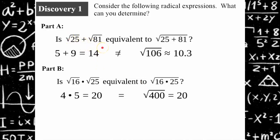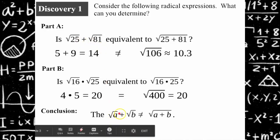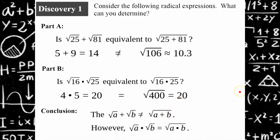In conclusion, the square root of A plus the square root of B does not equal the square root of A plus B. However, the square root of A multiplied by the square root of B is equivalent to the square root of A times B, and we will use this in future slides.